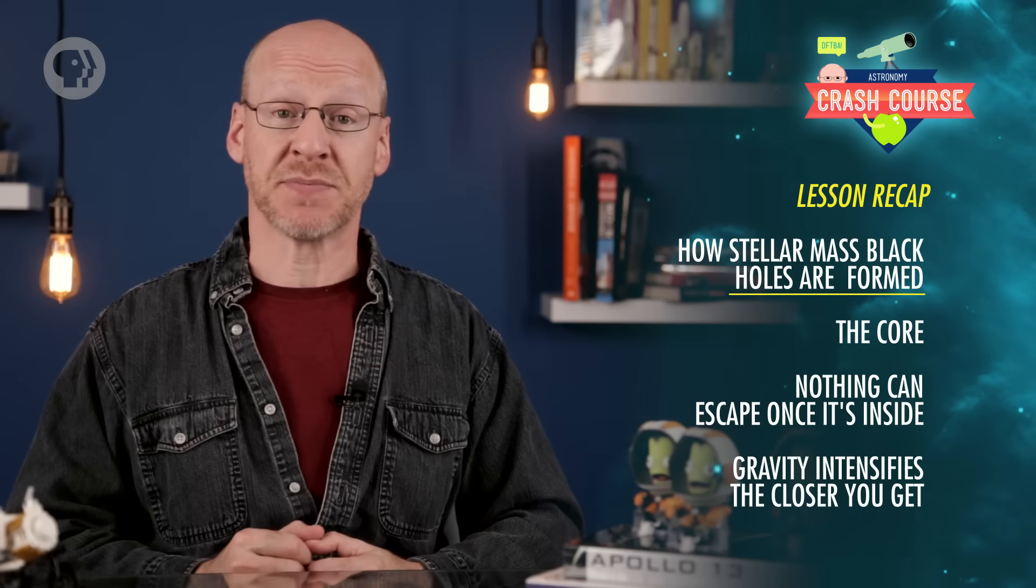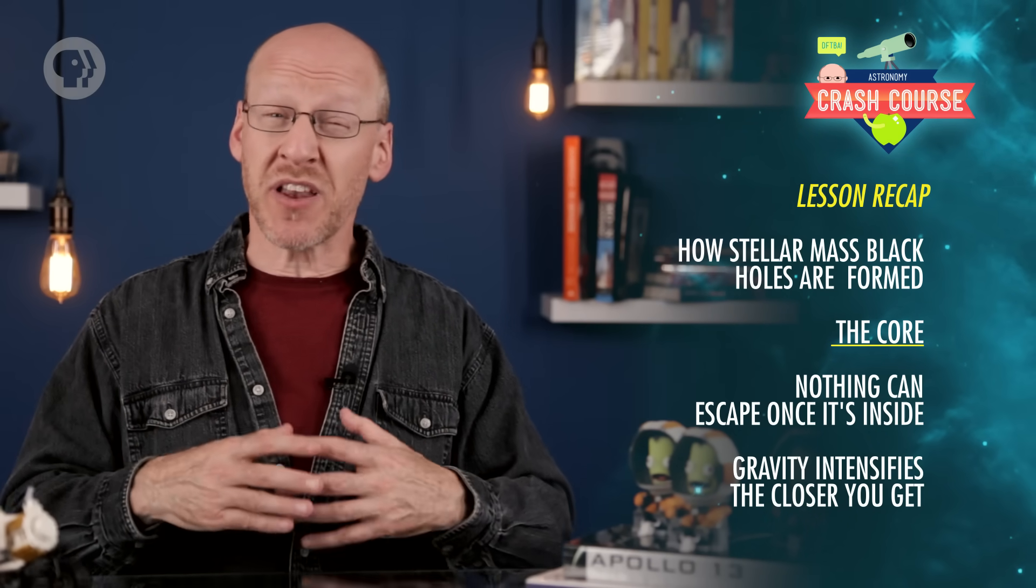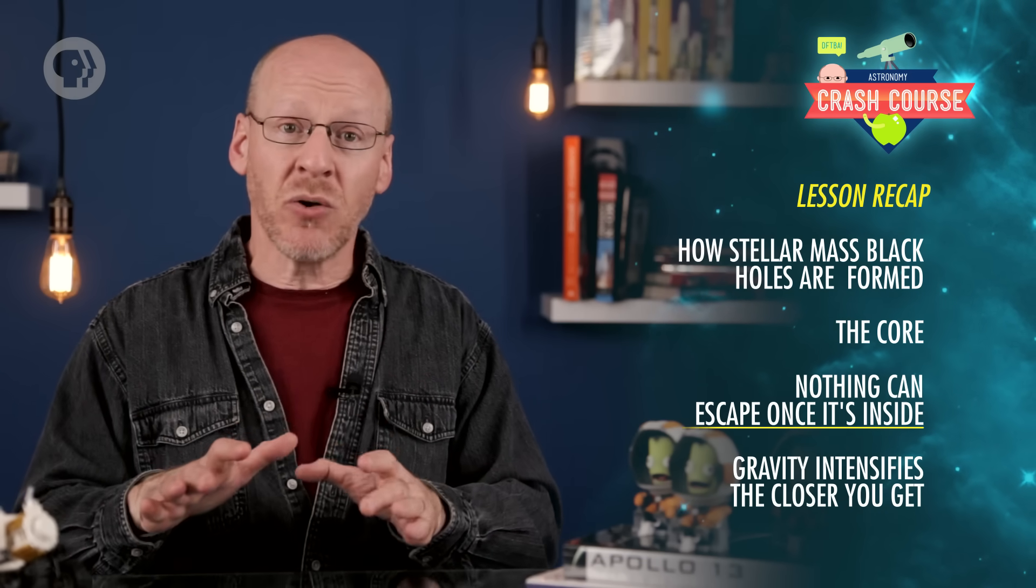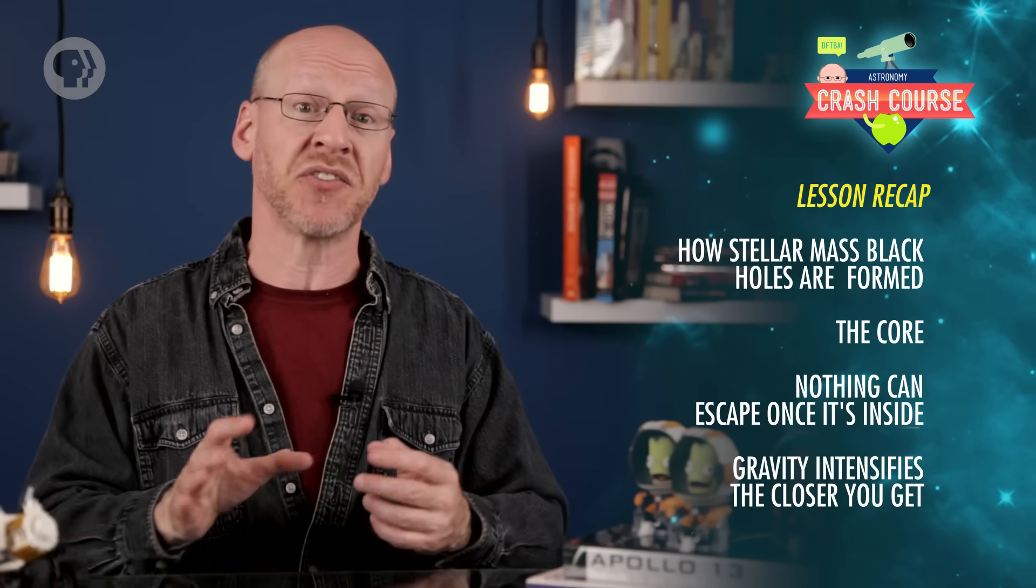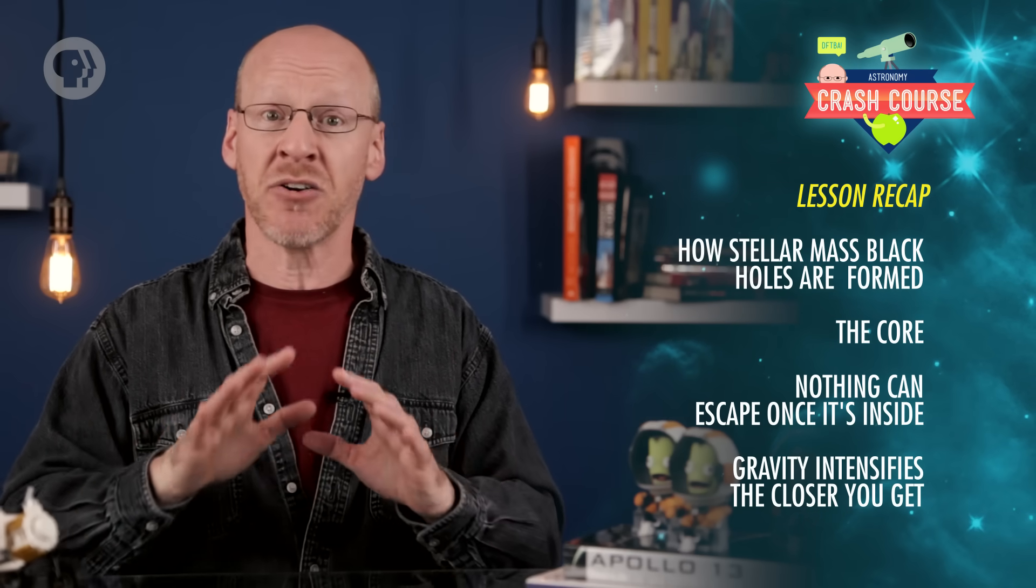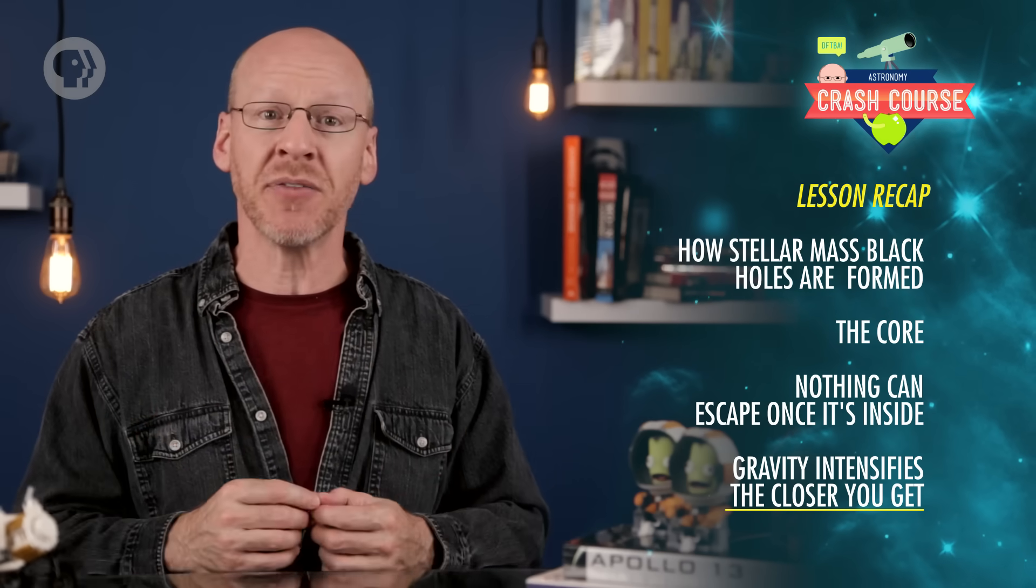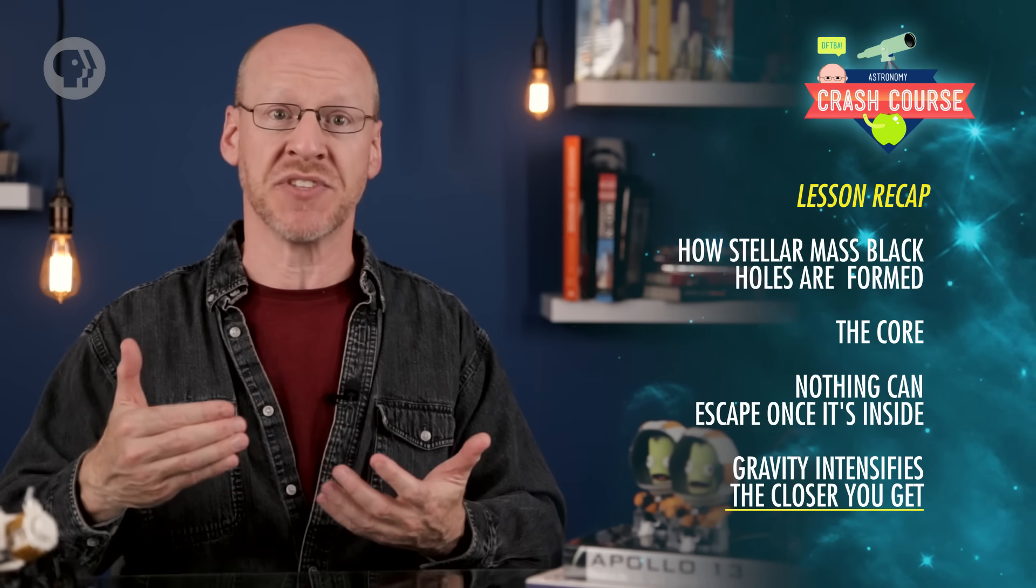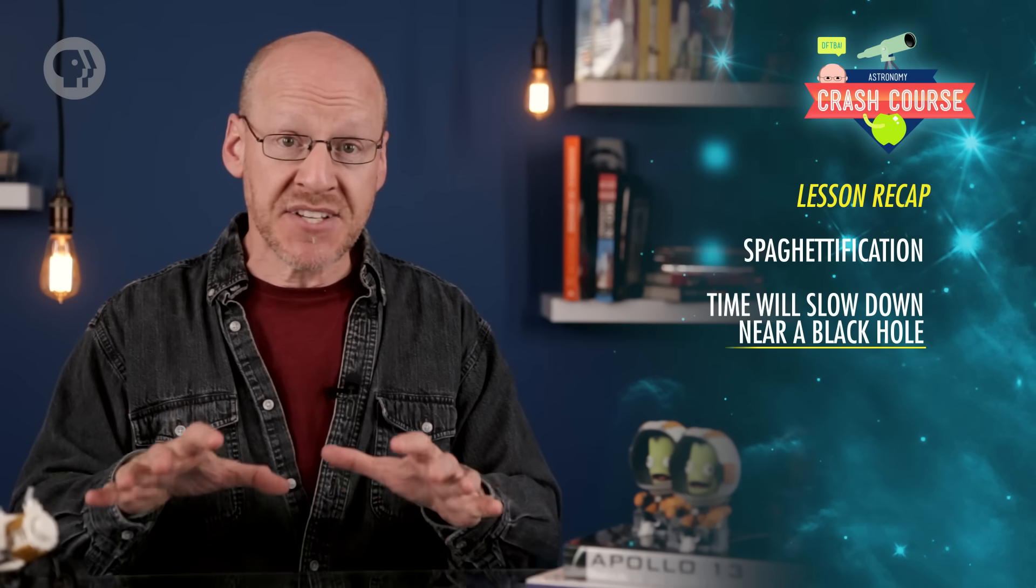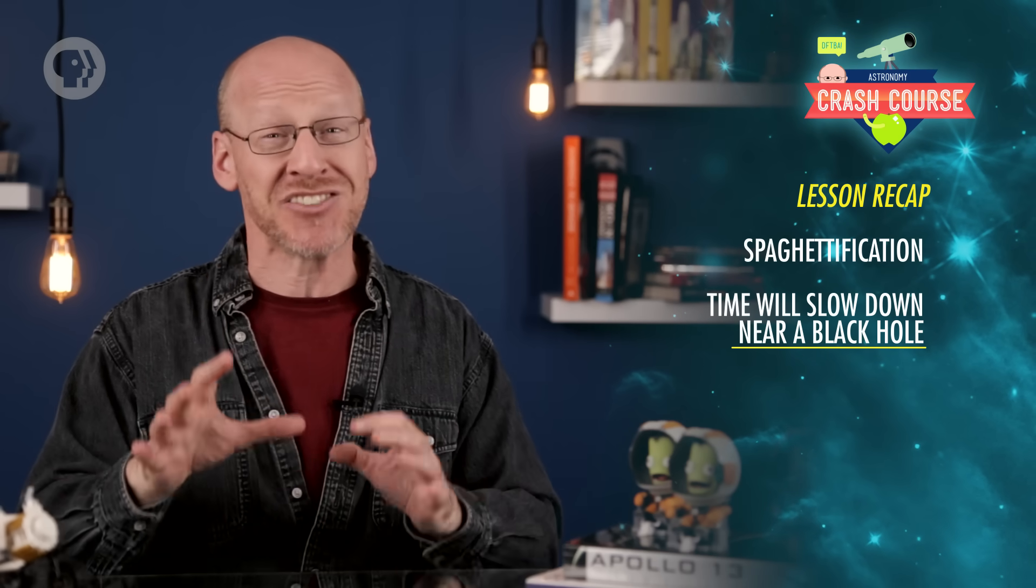Today you learned that stellar-mass black holes form when a very massive star dies and its core collapses. The core has to be more than about 2.8 times the Sun's mass to form a black hole. Black holes come in different sizes, but for all of them, the escape velocity is greater than the speed of light, so nothing can escape, not matter or light. They don't wander the universe gobbling everything down around them. Their gravity is only really intense very close to them. Tides near a stellar-mass black hole will spaghettify you, and time slows down when you get near a black hole. Not that this helps much if you're falling in.